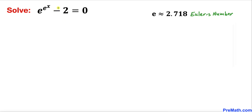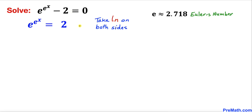Let's focus on this original equation now. Let's move this negative 2 to the right hand side, and in this next step, negative 2 has become positive 2 on the right hand side.